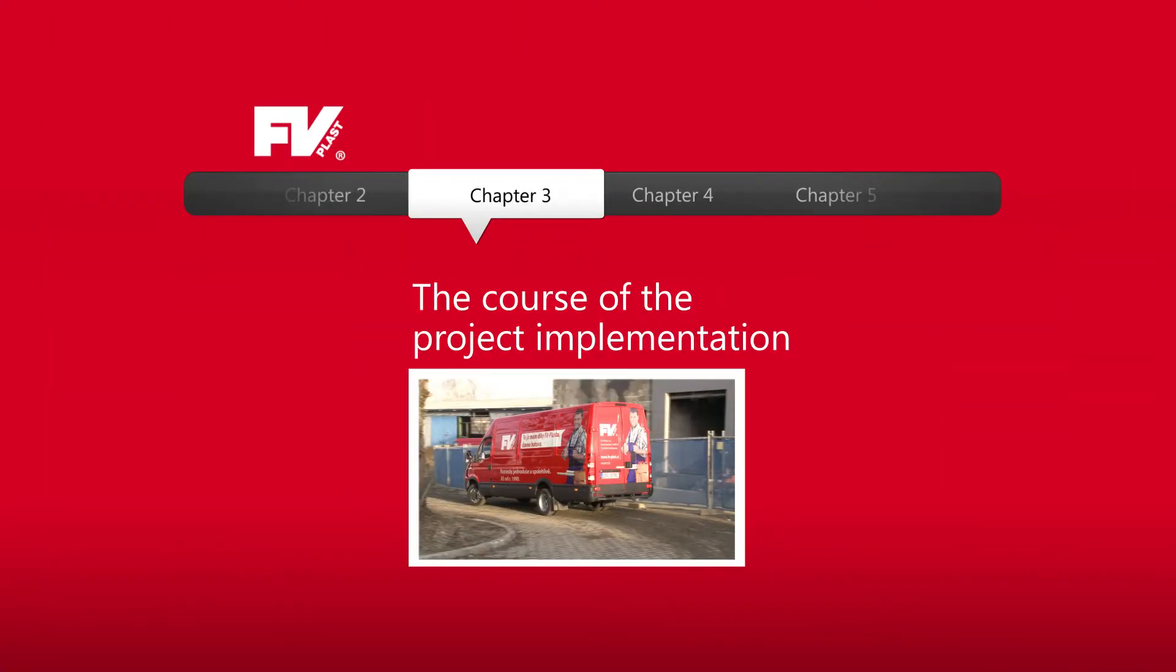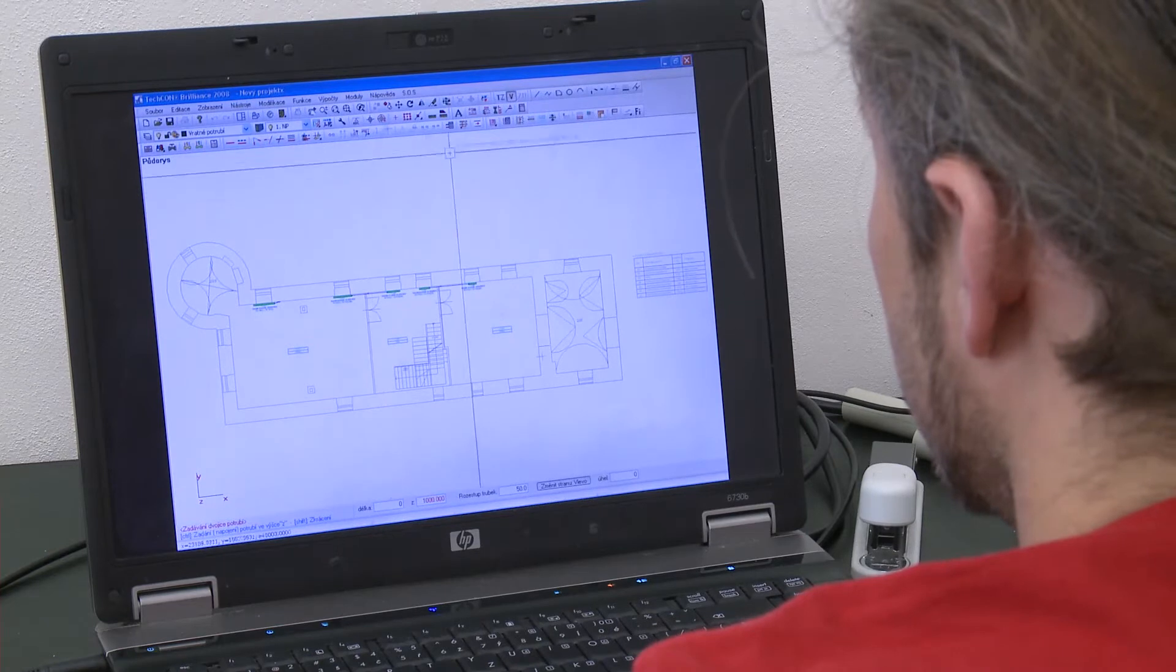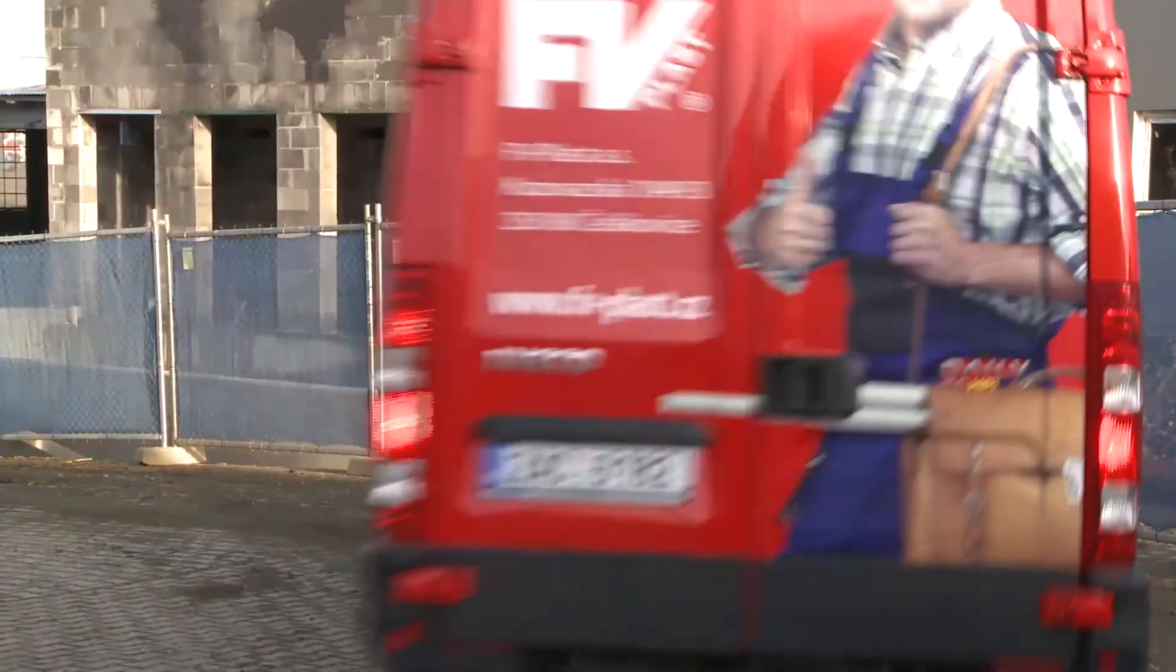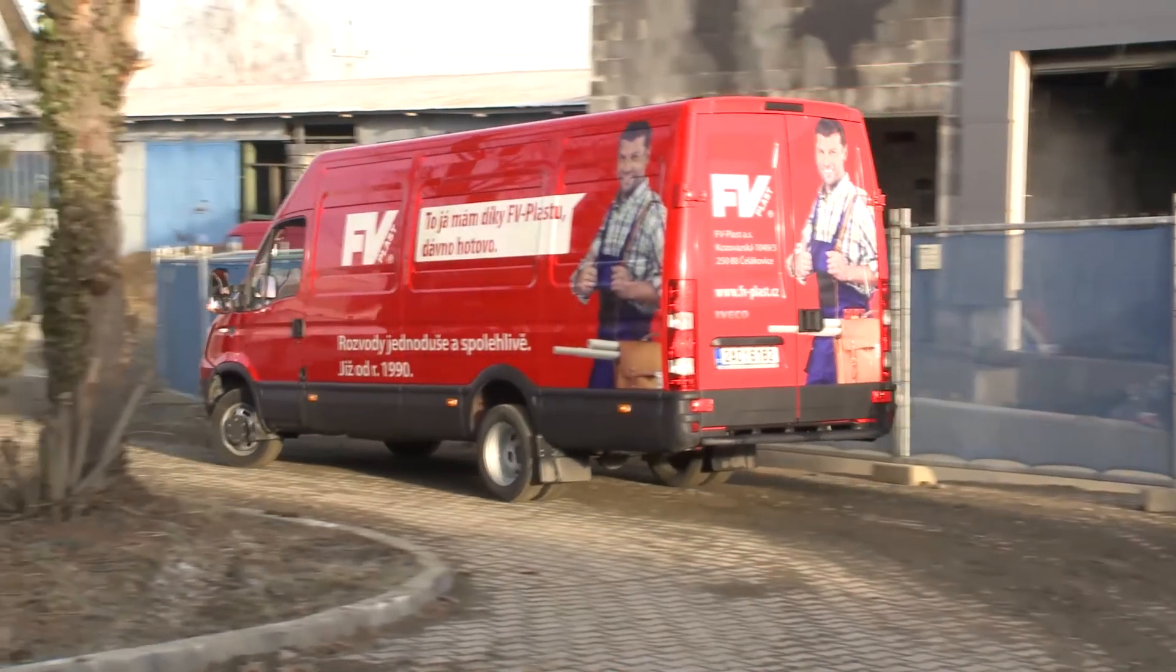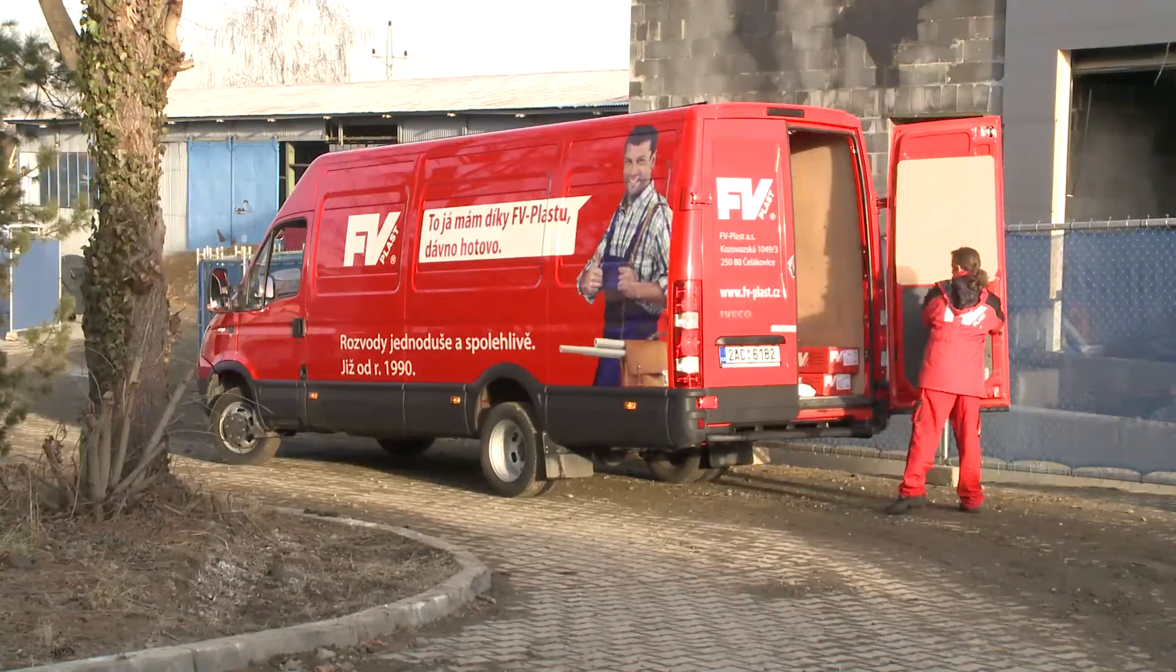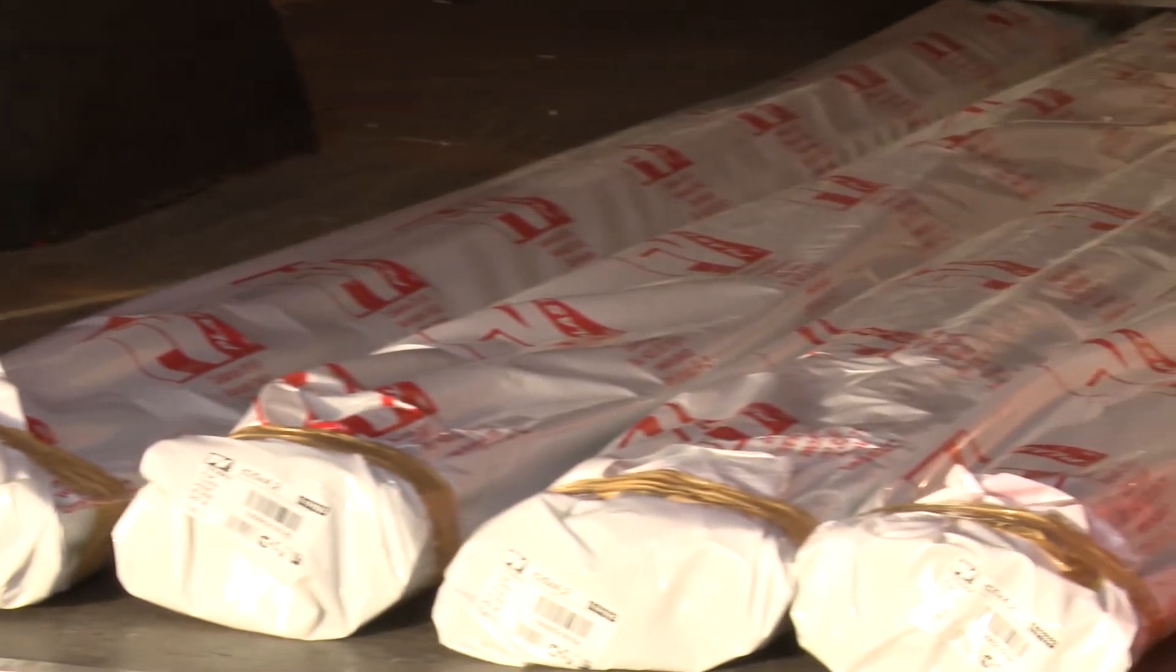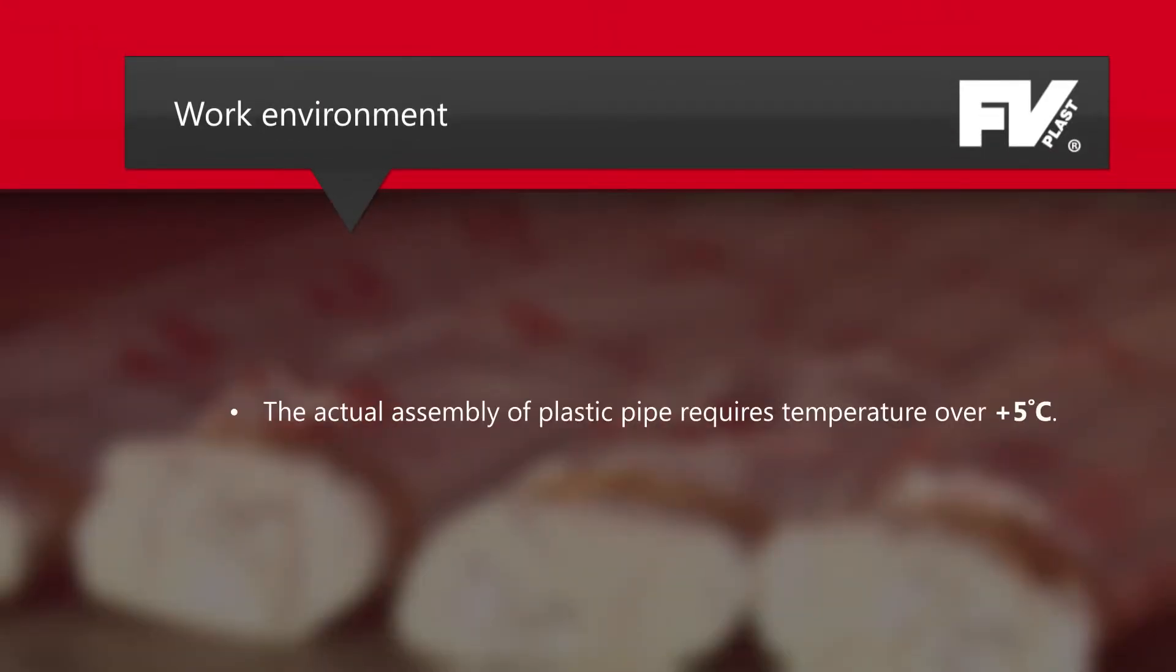Before start of implementation it is very important to develop a project. We provide designers with our own calculation program for designing, FV CAD. The actual implementation begins with the transport of elements to the site and their storage. The products of FV Plast are packed in high quality protective packaging which we leave packed until assembly. The actual installation of plastic pipes requires temperatures over plus 5 degrees centigrade with respect to material and ensuring of optimum welding conditions. For these reasons the work environment on site must be warm.